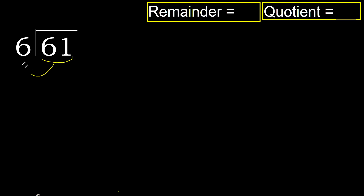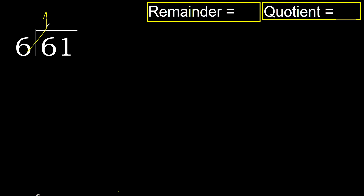61 divided by 6. 6 is not less, therefore with 6. 6 multiplied by which number is nearest? 6, but not greater. 6 multiplied by 2 is 12, which is greater. Multiplied by 1 is 6, which is not greater.